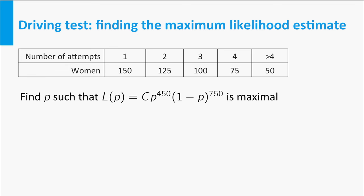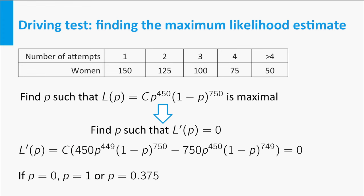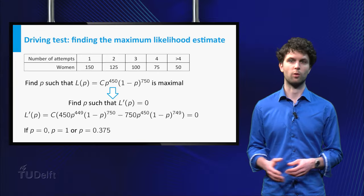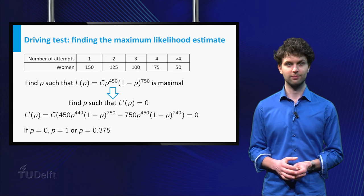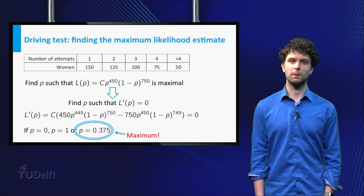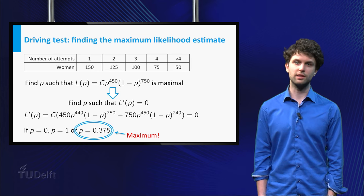Ok, once again, remember that we want to find the value of P for which this expression is maximal. Well, we can simply take the derivative with respect to P, set this equal to 0, and solve for P. We find that the derivative is 0 if P is 0, 1, or 3 over 8. However, the maximum is only obtained in this last point, check this yourself.